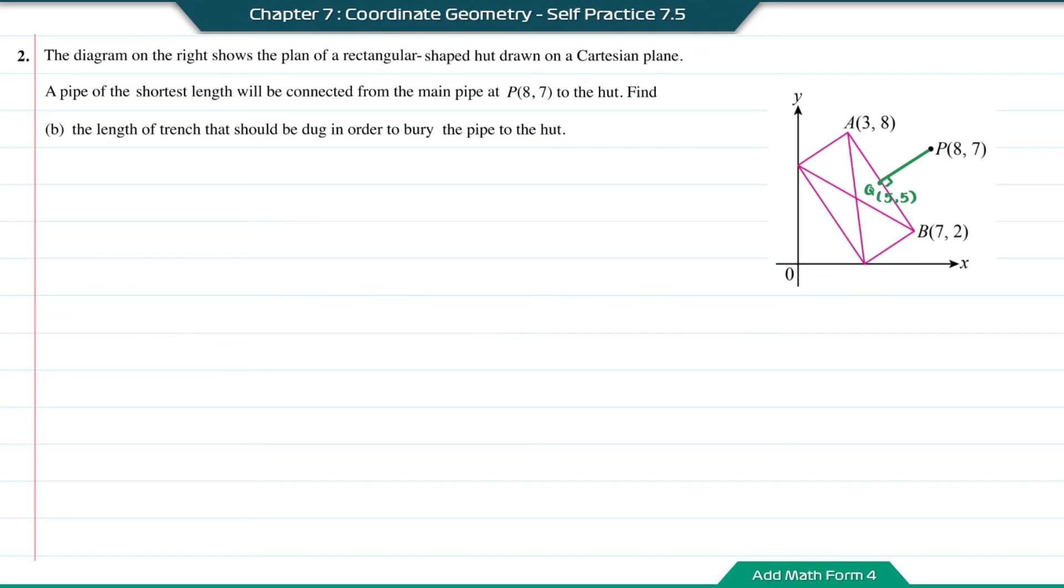Question B: Find the length of trench that should be dug in order to bury the pipe to the hut. The length here refers to the length of the straight line PQ. Using the distance formula, it will be √[(8-5)² + (7-5)²] = √[9 + 4] = √13 = 3.606 units.